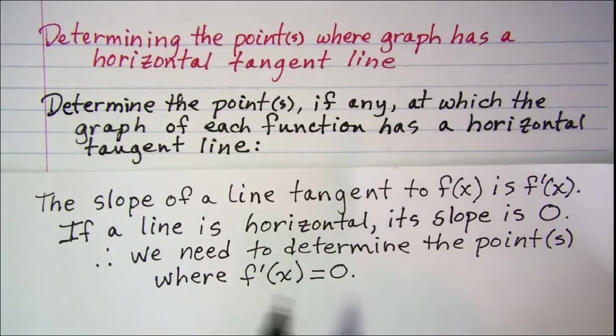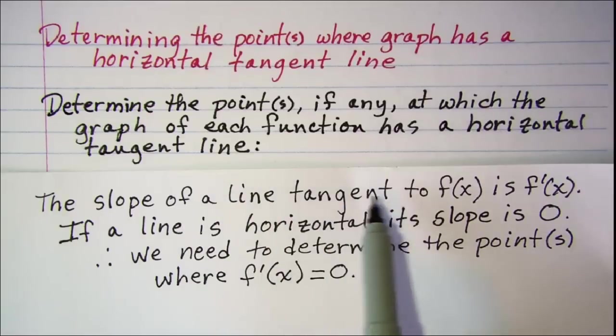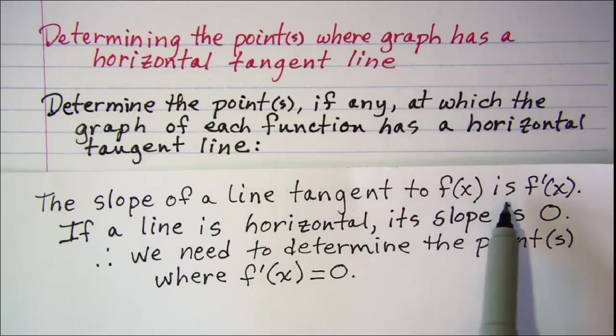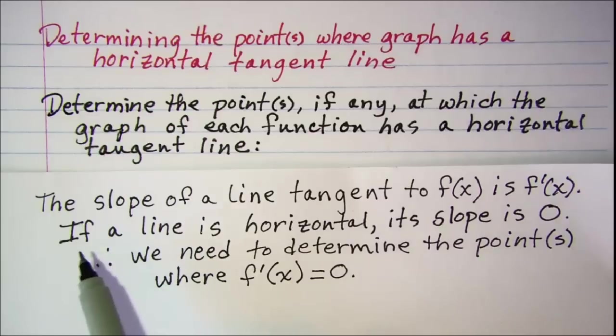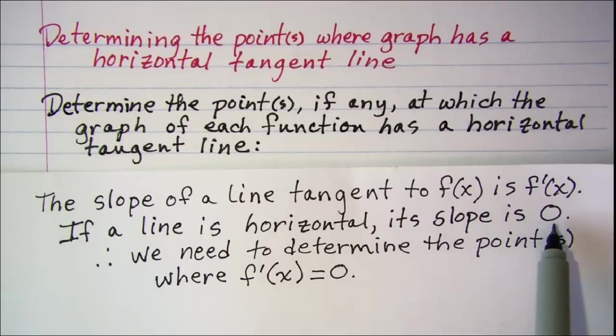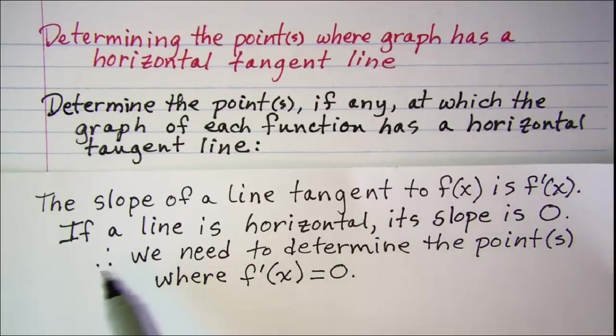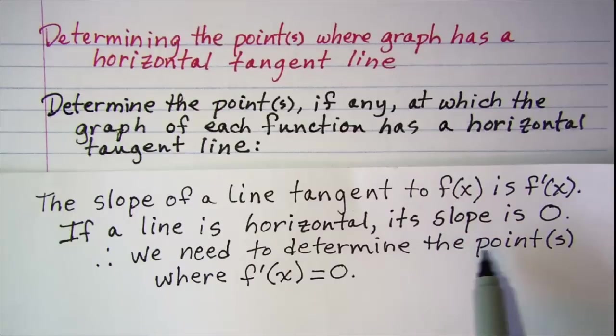Now before we begin, make note that the slope of a line tangent to a function is the derivative of the function. And if a line is horizontal, its slope is 0. Therefore we need to determine the point or points where the derivative is equal to 0.